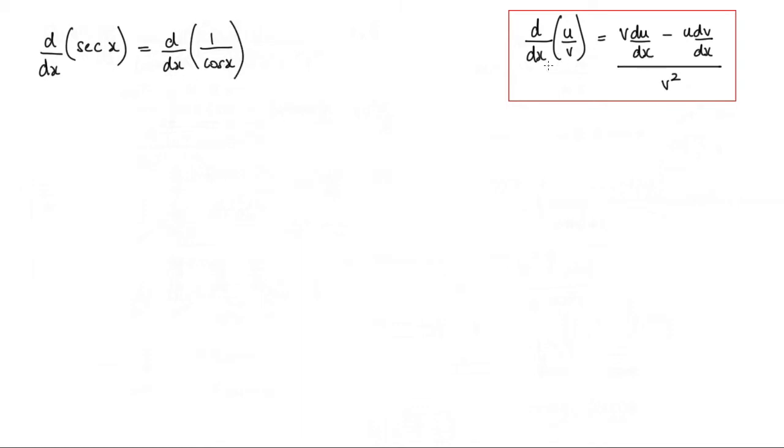So now when we compare this to the quotient rule we can see we've got a u and a v term.